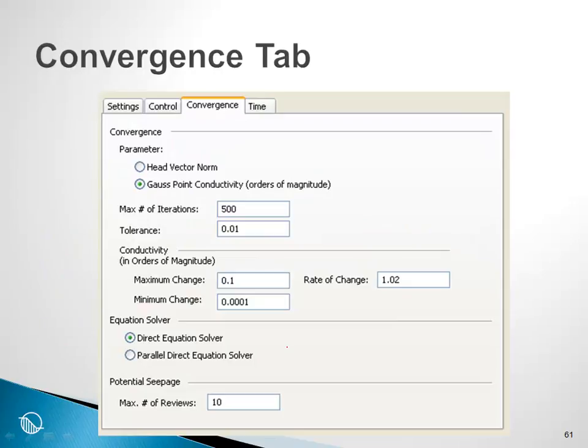I will show you the convergence tab under the key in analysis settings dialog box. There are several parameters by which we can control convergence. I will only talk about the second one here, and basically the effort is to make sure that the conductivity corresponding to the most recently computed head corresponds to the conductivity on the function.